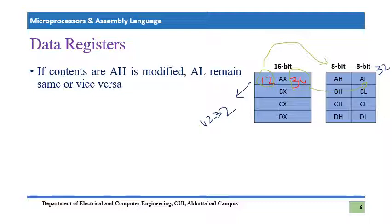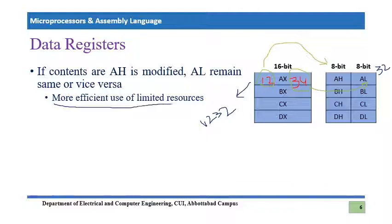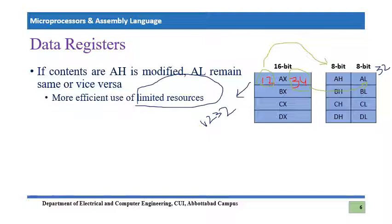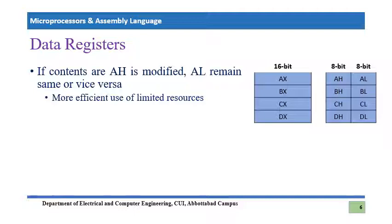This property provides more efficient use of limited resources. We don't have millions of registers inside the 8086 — we have only four general purpose registers for data manipulation. So in the case of limited resources, we use them more efficiently. If we are only going to modify 8 bits of information, the other 8 bits are preserved. That is why this property is responsible for the efficient use of limited resources.